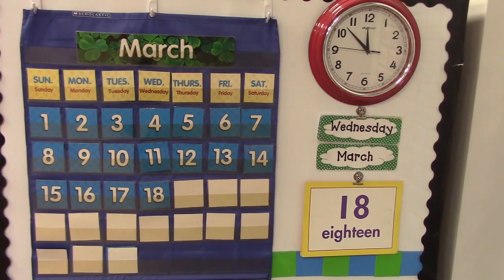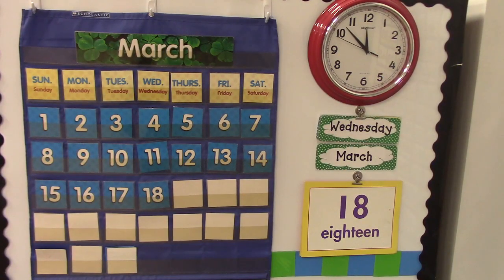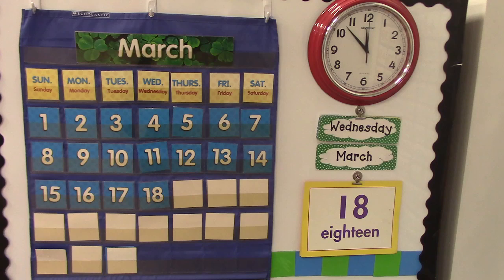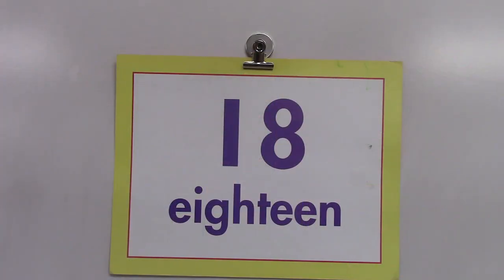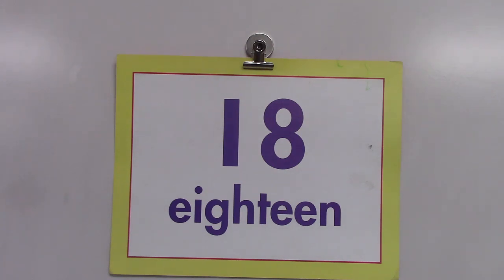Hello. Today is Wednesday, March 18th. What day comes before Wednesday? That's right, it's Tuesday. Can you find 18 on the calendar? What number will tomorrow be? That's right, it's the 19th. Today it is the 18th, so we're going to look at the number 18. Let's spell 18 together: E-I-G-H-T-E-E-N.